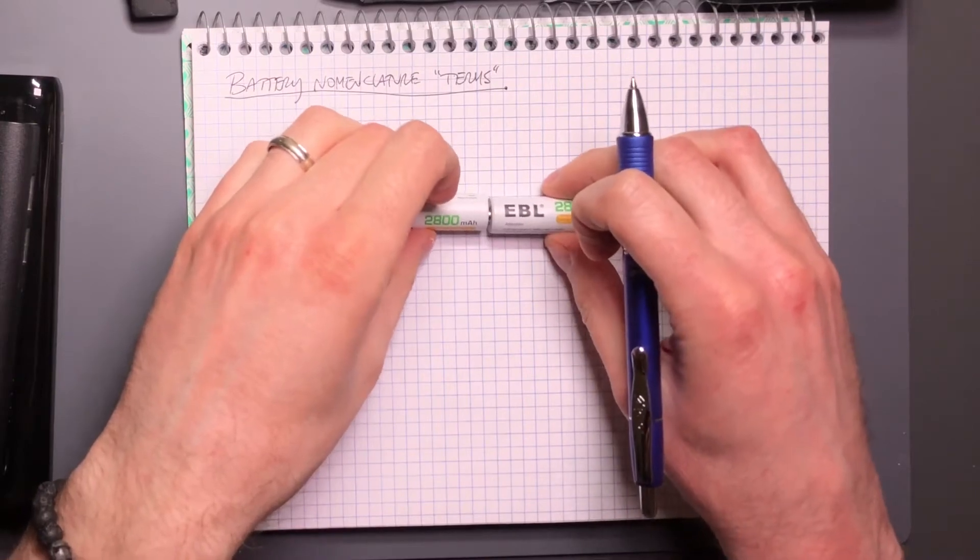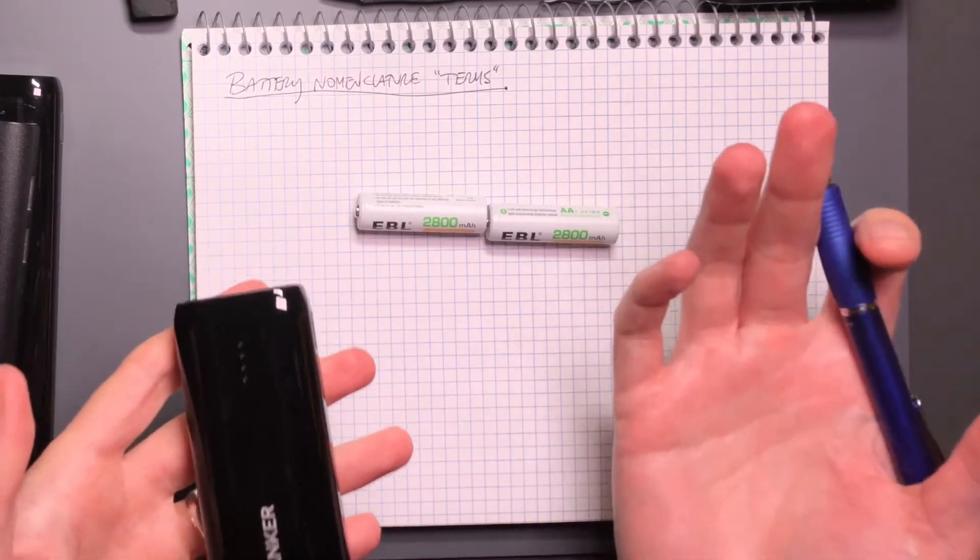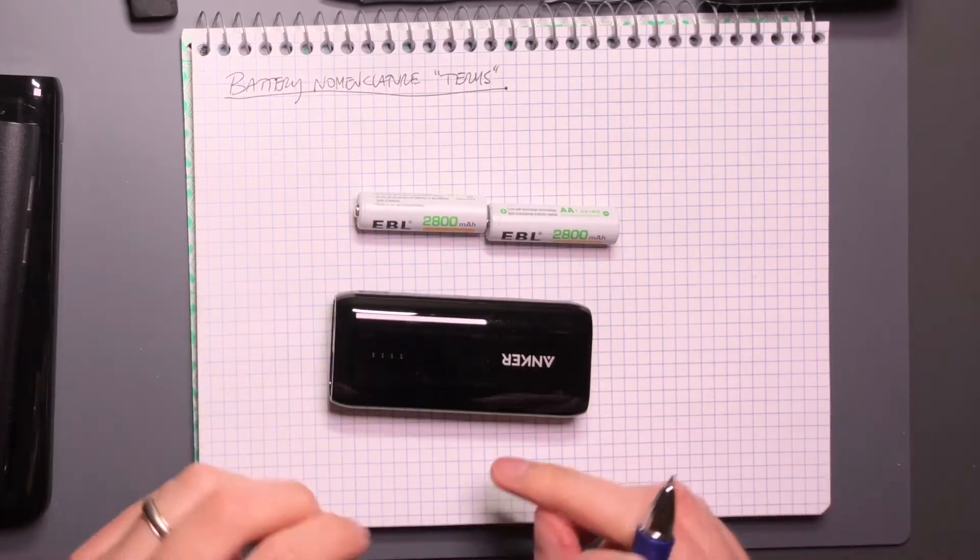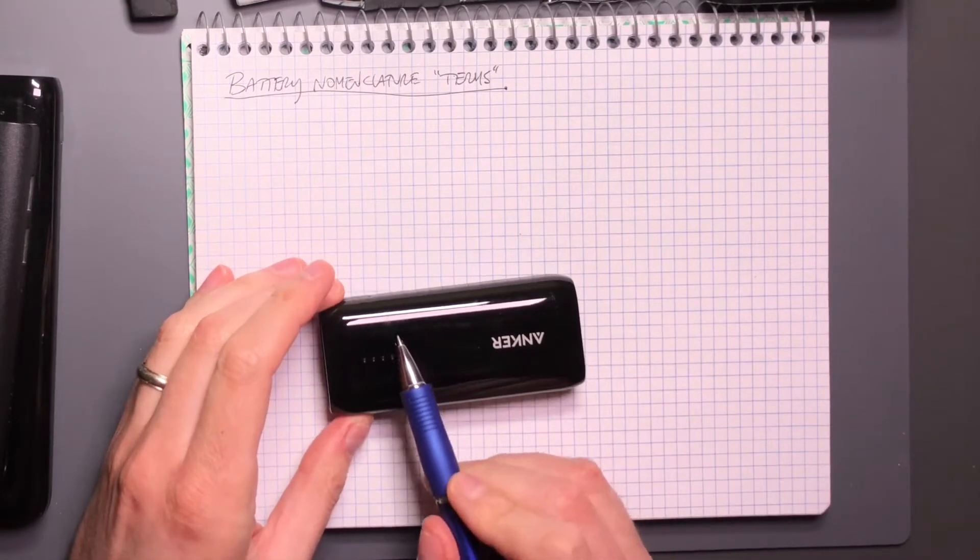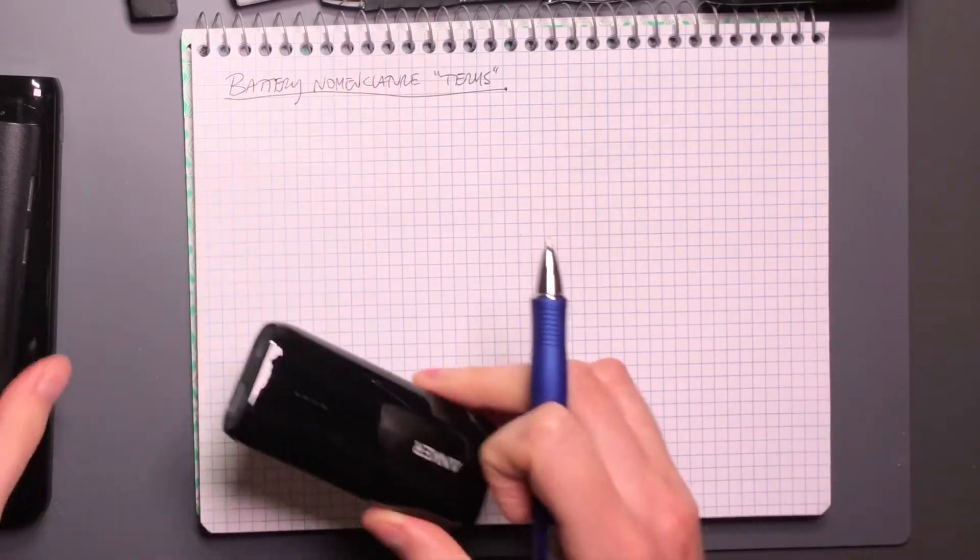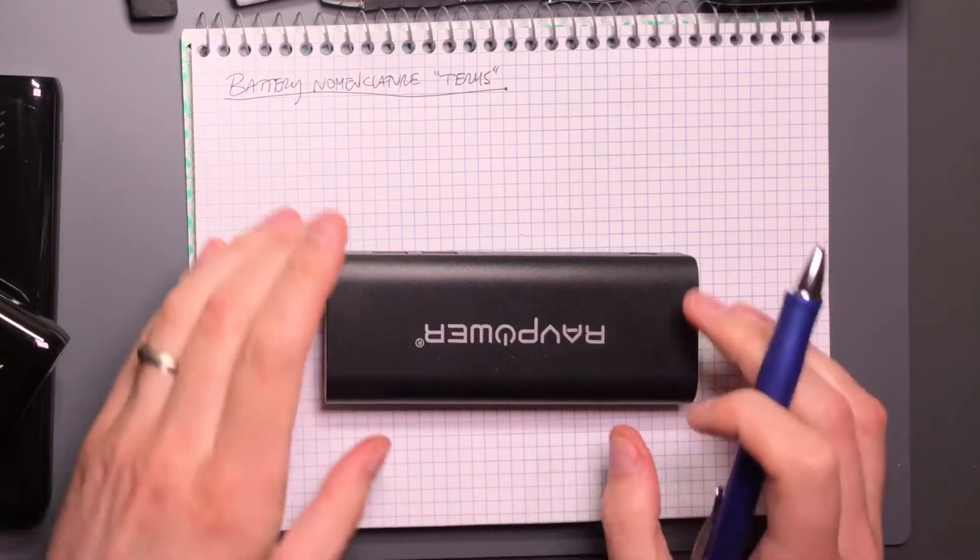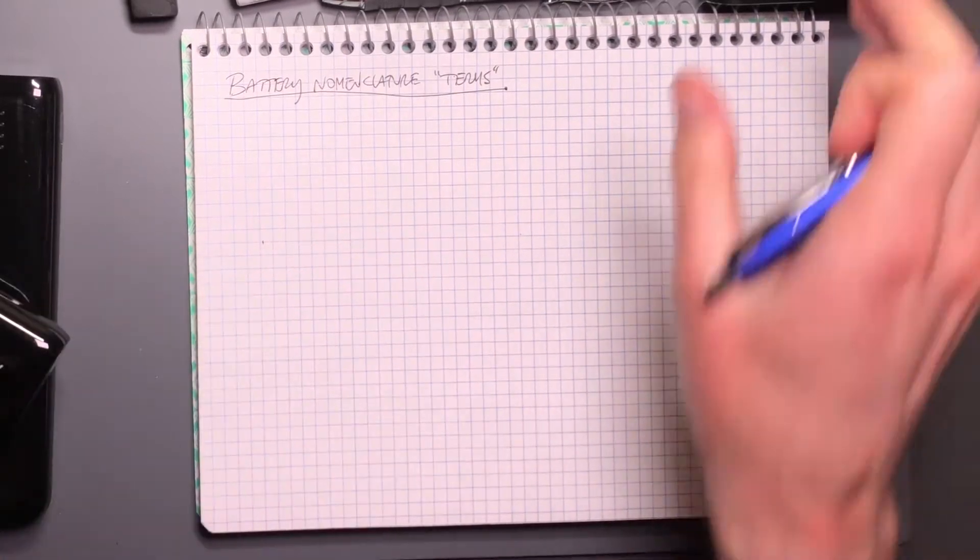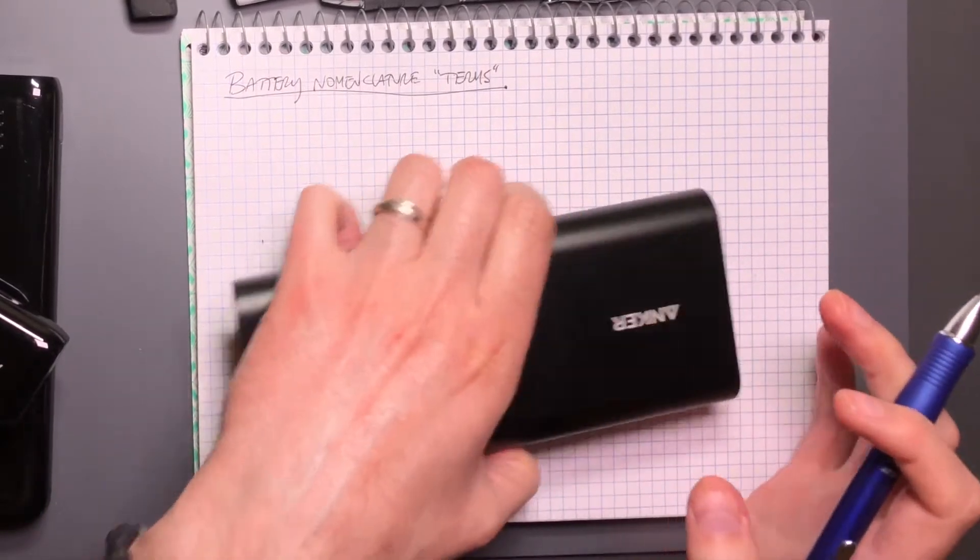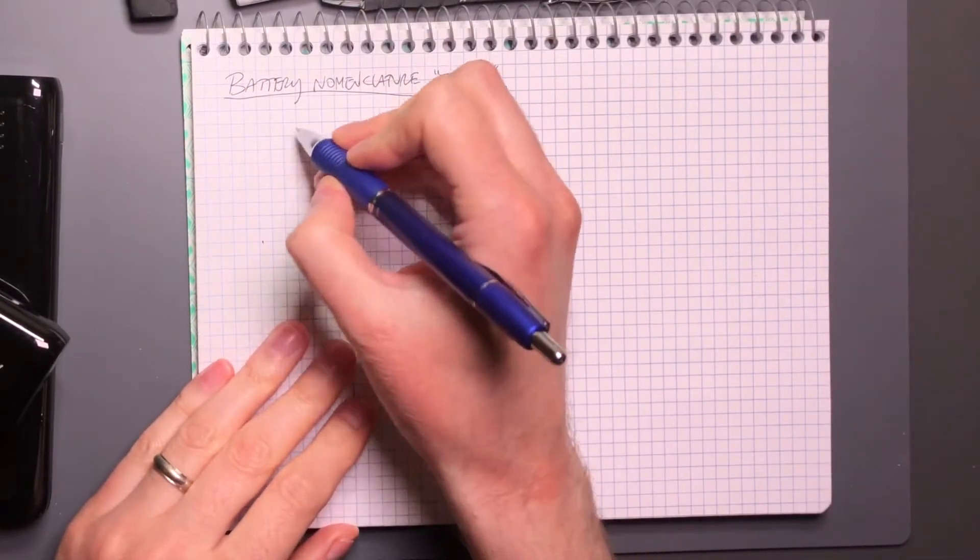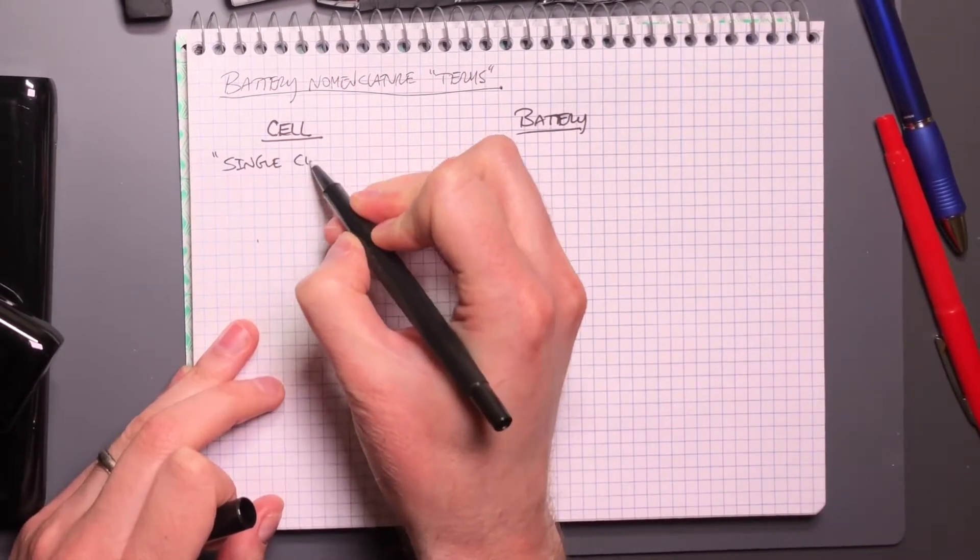When we take these things and put them together and put them into a pack, it's what's known as a battery of cells. So this particular battery of cells has two 18650 nickel metal hydride cells in it. So there's two cells comprising one battery. This one has four 18650 cells that comprise a battery. This one that we looked at a few months back has eight cells in it comprising a battery.